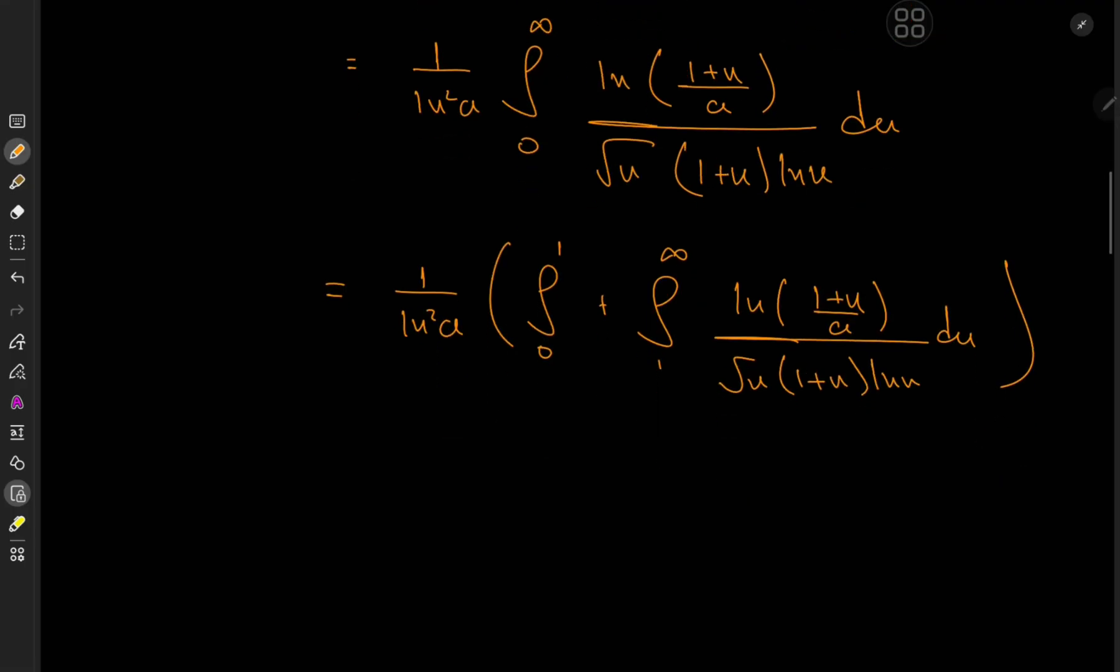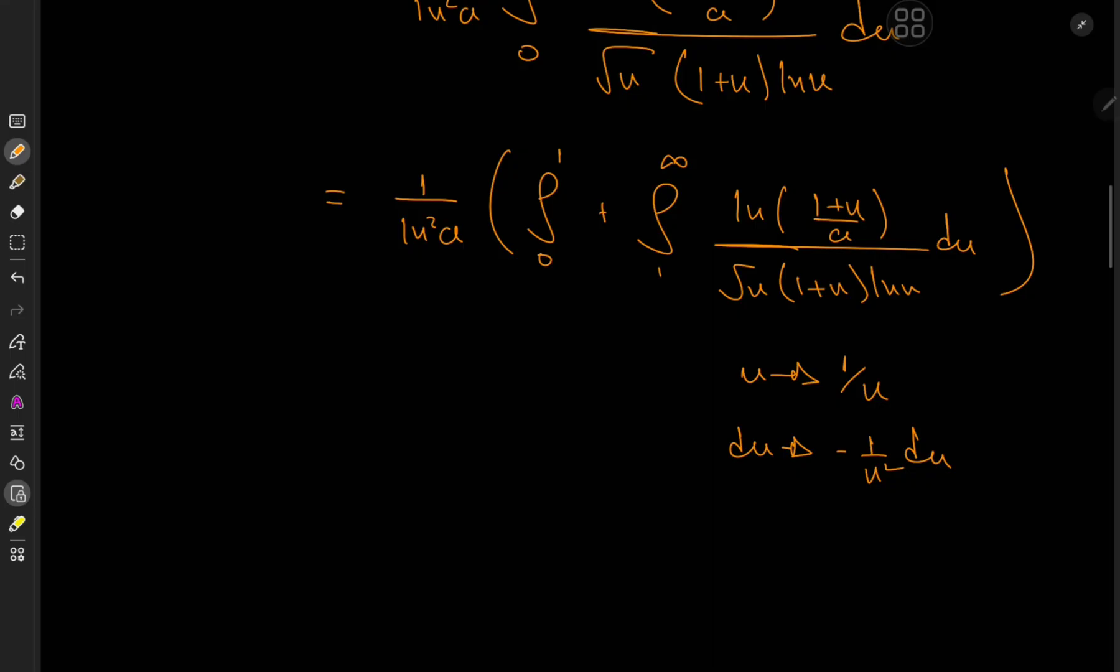And it's here that the transformation of u to 1 over u comes in so damn handy. So this takes du to the negative 1 over u squared du realm. And it changes your limits of integration to 1 and 0, which then becomes 0 and 1 when you switch up the limits and introduce another negative sign, cancel out this one, you get the whole idea.